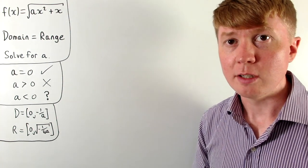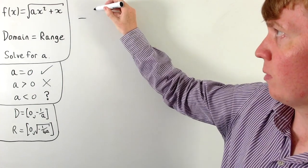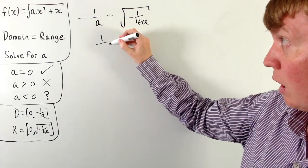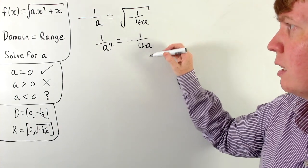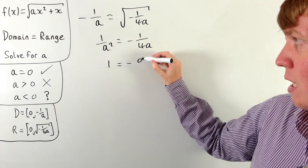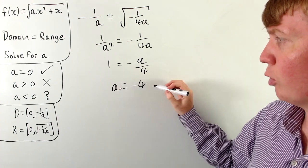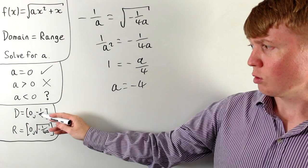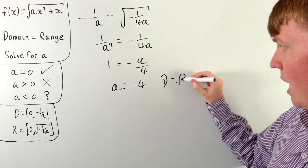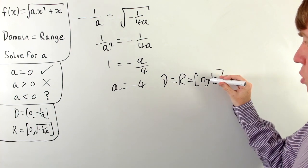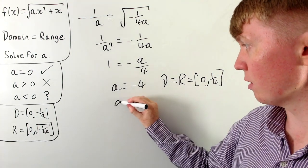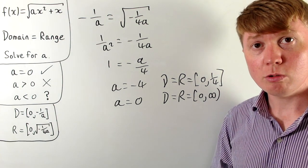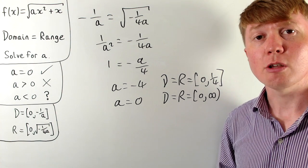Setting domain equal to range, we need −1/a = √(−1/(4a)). Squaring both sides gives 1/a² = −1/(4a). Multiplying both sides by a² gives 1 = −a/4, so a = −4. When a = −4, the domain is [0, 1/4] and the range is also [0, 1/4], confirming the solution. Combined with a = 0, we have two solutions: a = −4 and a = 0.